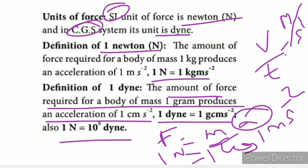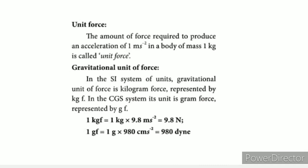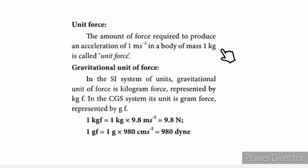The unit of force required: one gram mass producing an acceleration of one centimeter per second squared gives one dyne. One dyne equals one gram centimeter per second squared. One newton equals ten to the power five dynes. The amount of force required to produce an acceleration of one meter per second squared in a body of mass one kilogram is called one newton.